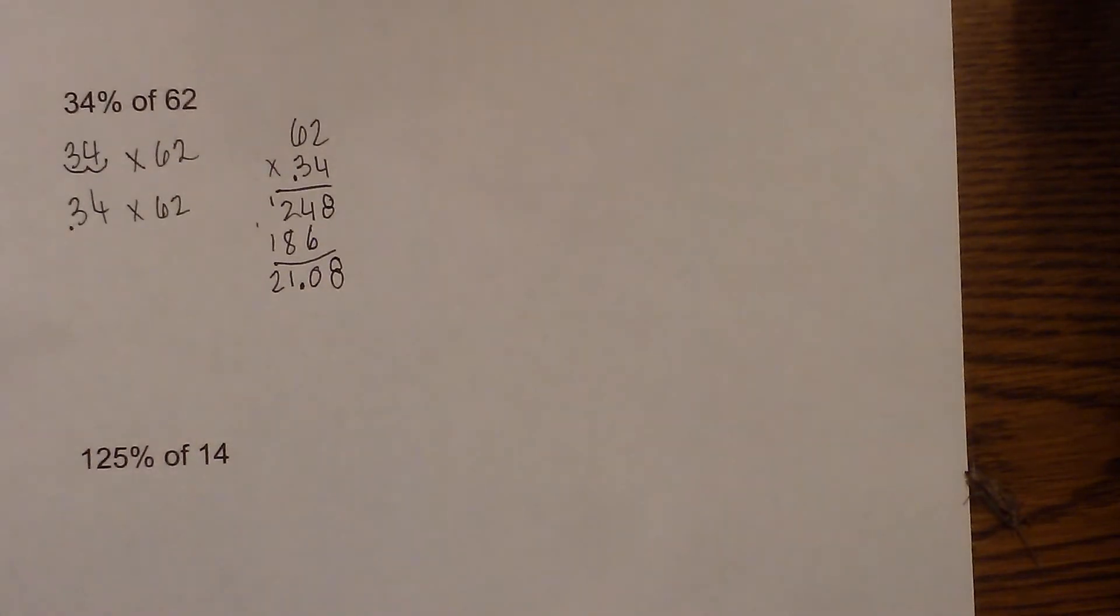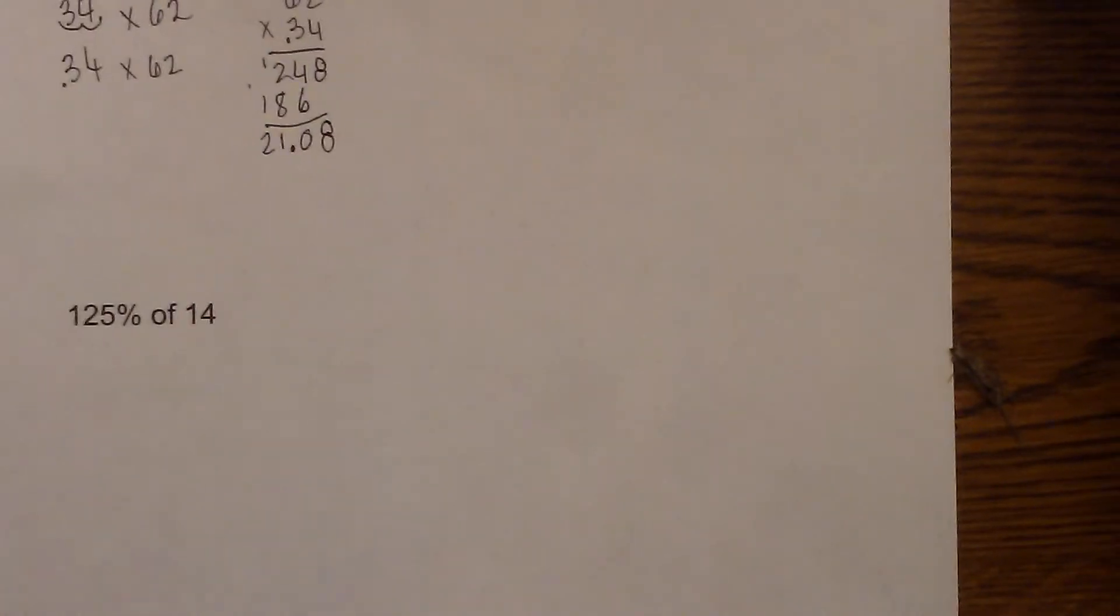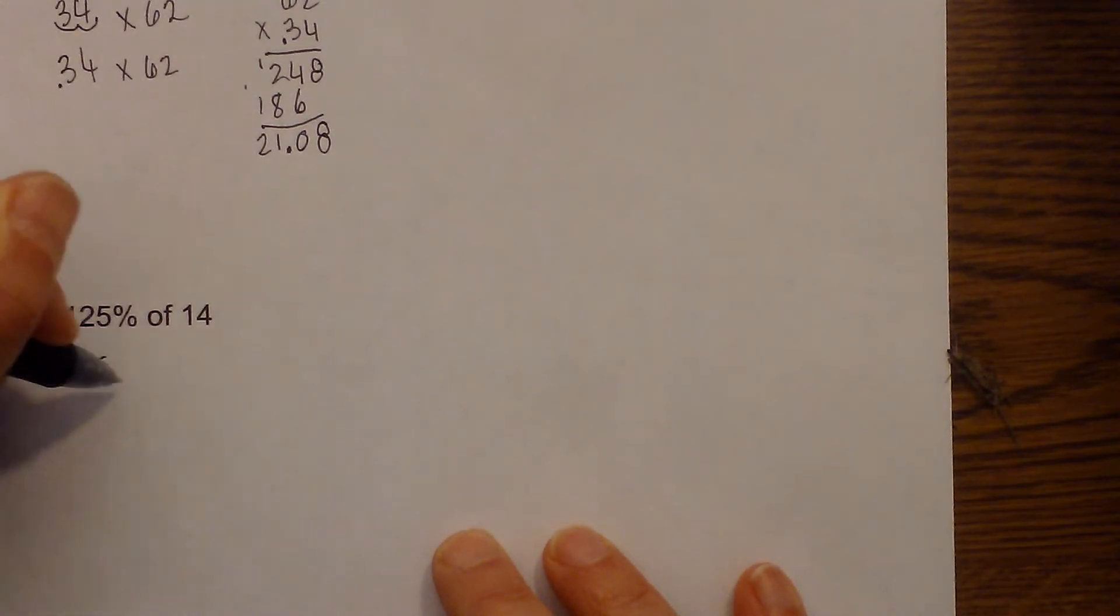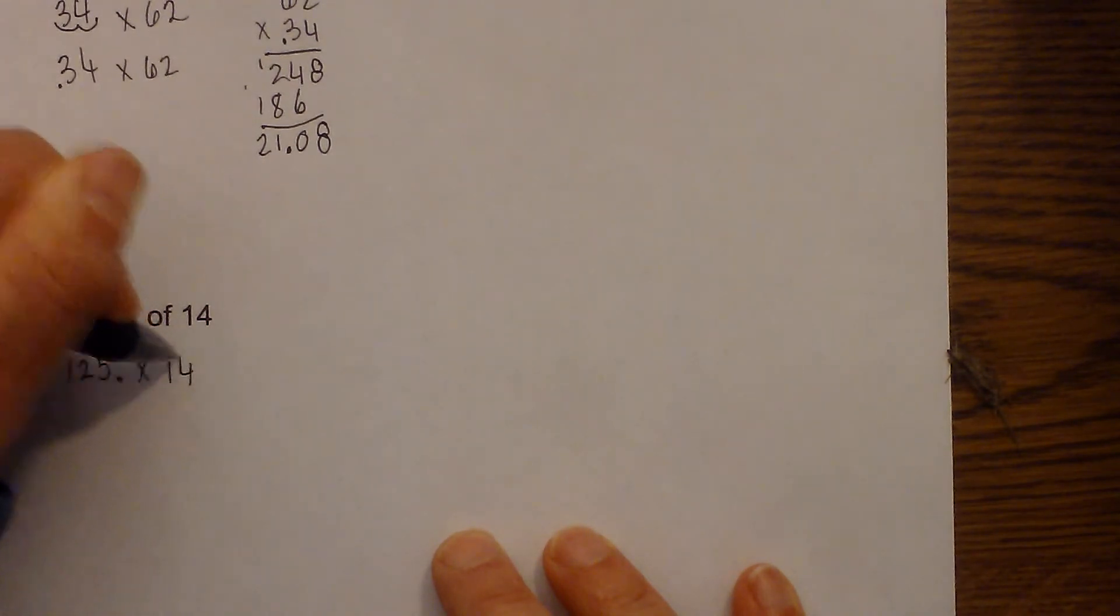What if we get one that looks like this. 125 percent of 14. Do the same thing. Replace. So we have 125. Replace the percent with the decimal. The of with multiplication. Times 14.